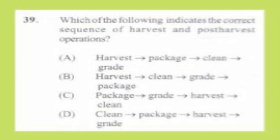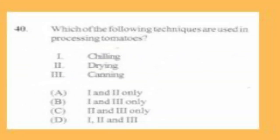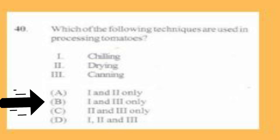Question number 40. Which of the following techniques are used in processing tomatoes? 1. Chilling, 2. Drying, 3. Canning. A. 1 and 2 only, B. 1 and 3 only, C. 2 and 3 only, D. 1, 2 and 3. The answer is B, 1 and 3 only.